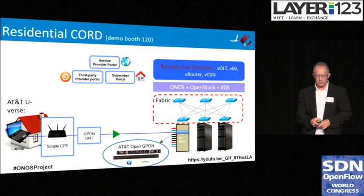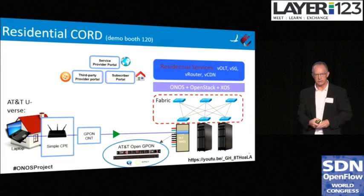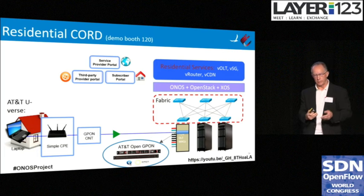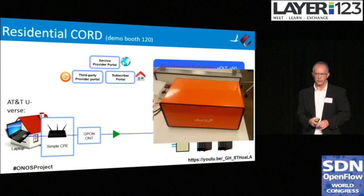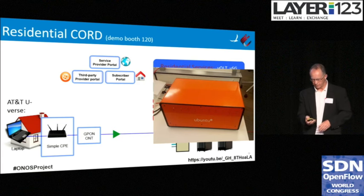Residential CORD is where CORD started — our first proof case with a simple CPE connecting through GPON to a device created by Celestica and designed by AT&T. We show different service portals so you can see what a customer gets, how AT&T accesses their capabilities, and how services are added by other vendors like Akamai. The same demonstration is running downstairs on a data center in a box from Canonical — an orange box. Please stop by and take a look.